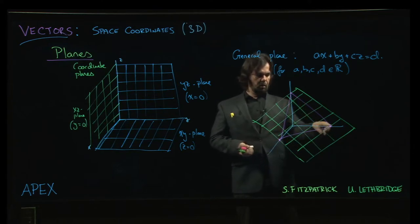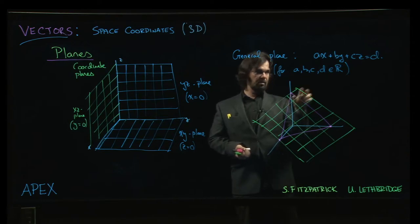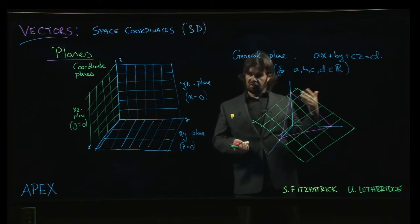And the way you find those points, of course, well, this is what you get when y and z are both equal to zero, x and z are both equal to zero, x and y are both equal to zero, right? You set two of the three coordinates equal to zero and solve for the other.